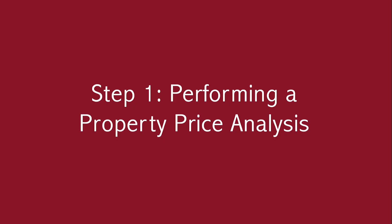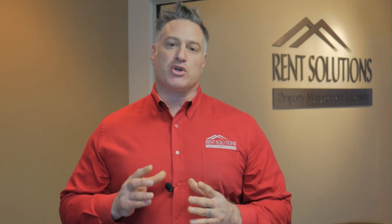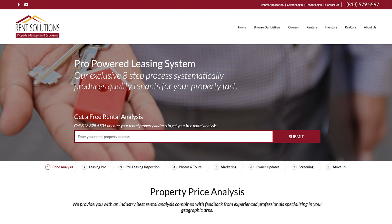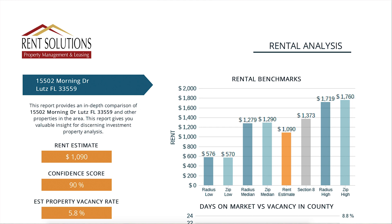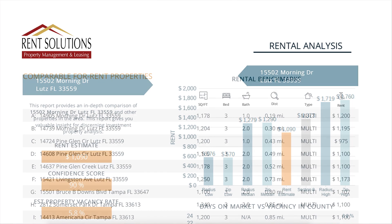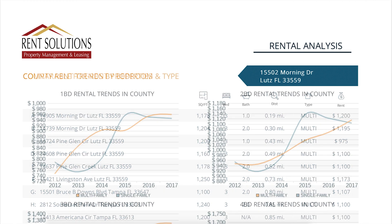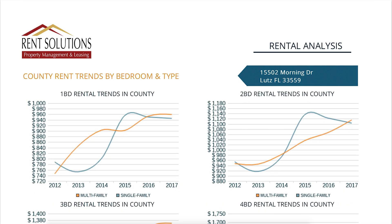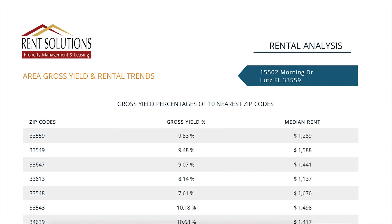The first step in the leasing process is performing a property price analysis. You may have started your process with us by visiting our website and requesting a free market estimate. If you haven't already requested an estimate, you can do it right on this page or throughout our website. This is an automated report, so you can do this at any time — even at 2 o'clock in the morning from anywhere in the world — and get a detailed analysis about your home and what it would rent for. This is just an estimate; it provides a range of what it would rent for based on the location and what similar homes have rented for.